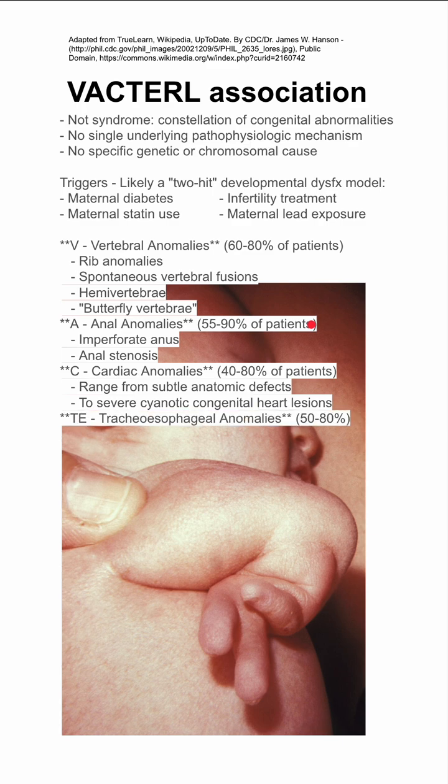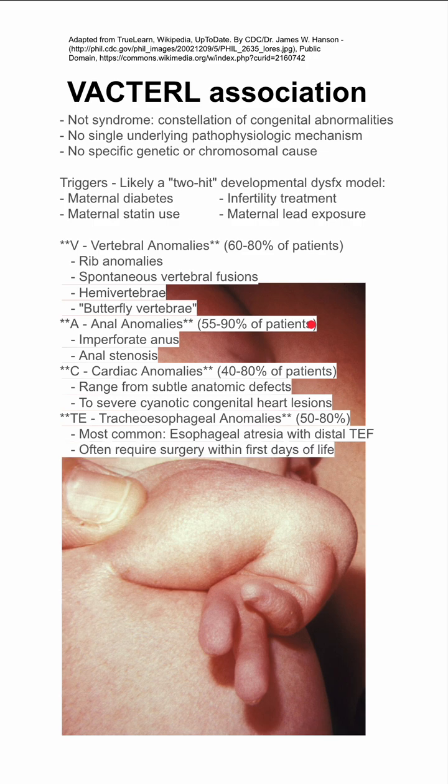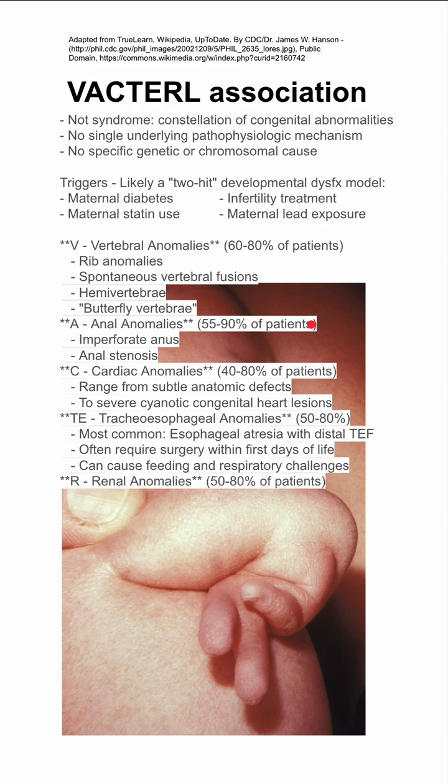TE is for tracheoesophageal abnormalities, affecting 50% to 80% of patients. The most common presentation is esophageal atresia with a distal tracheoesophageal fistula, which often requires surgery within the first few days of life and can cause feeding and respiratory challenges.